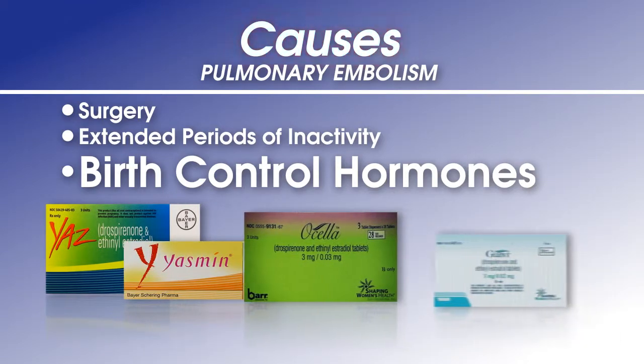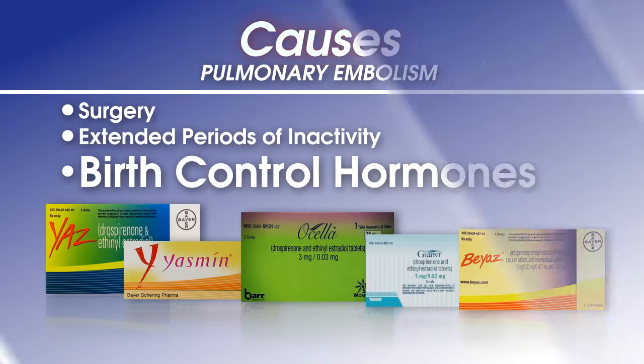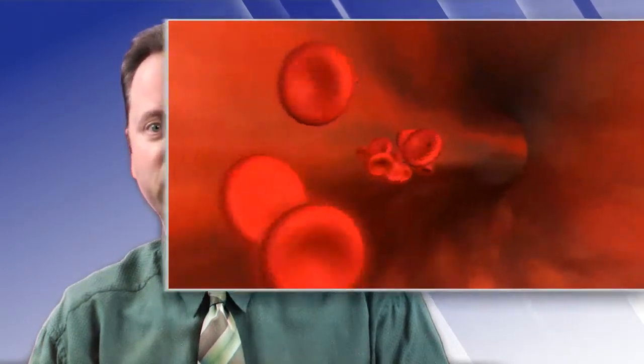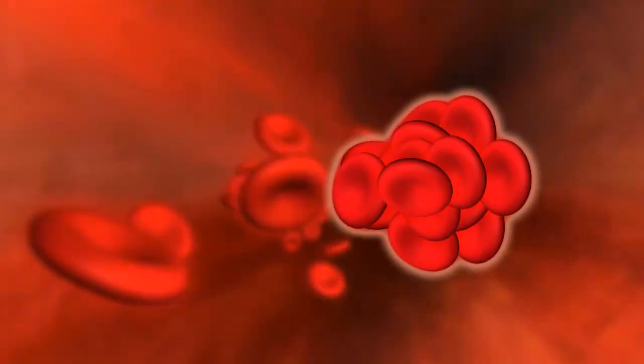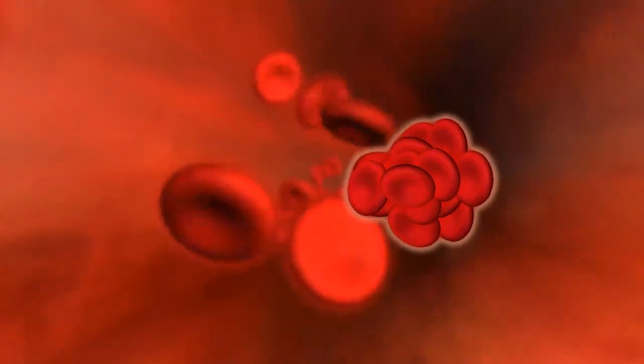Pulmonary embolisms generally occur when either a single or multiple blood clots are circulated through the bloodstream and become wedged in the pulmonary artery, which is the blood vessel that transports the blood from the heart to the lungs. When the clot occurs, the affected lung tissue is deprived of oxygen, which compromises the overall oxygen supply to the rest of the body and can result in death from oxygen deprivation if the clot is large enough.